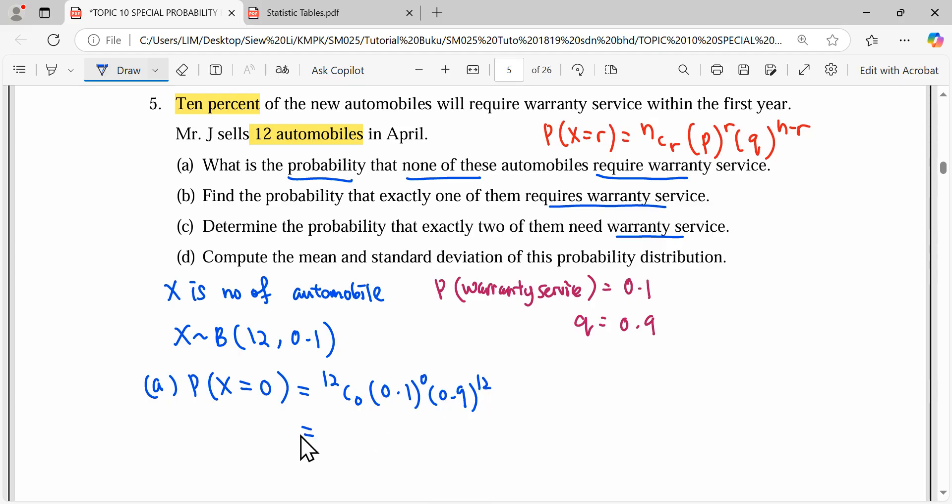Then we continue for question B: find the probability that exactly one of them needs service. So the number of automobiles that need service is exactly one. Again, when you have equal, we use the formula: 12C1 times 0.1 power 1 times 0.9 power 11. Press your calculator and we get 0.3766.